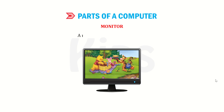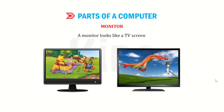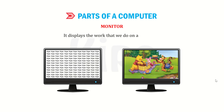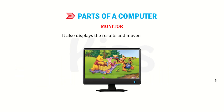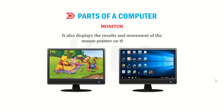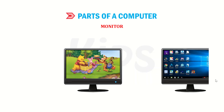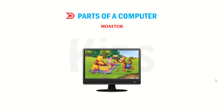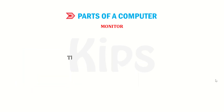Monitor: A monitor looks like a TV screen. It displays the work that we do on a computer. It also displays the results and movement of the mouse pointer on the screen. A monitor is also known as VDU — visual display unit. The information that we see on a monitor is called soft copy. There are three types of monitors.